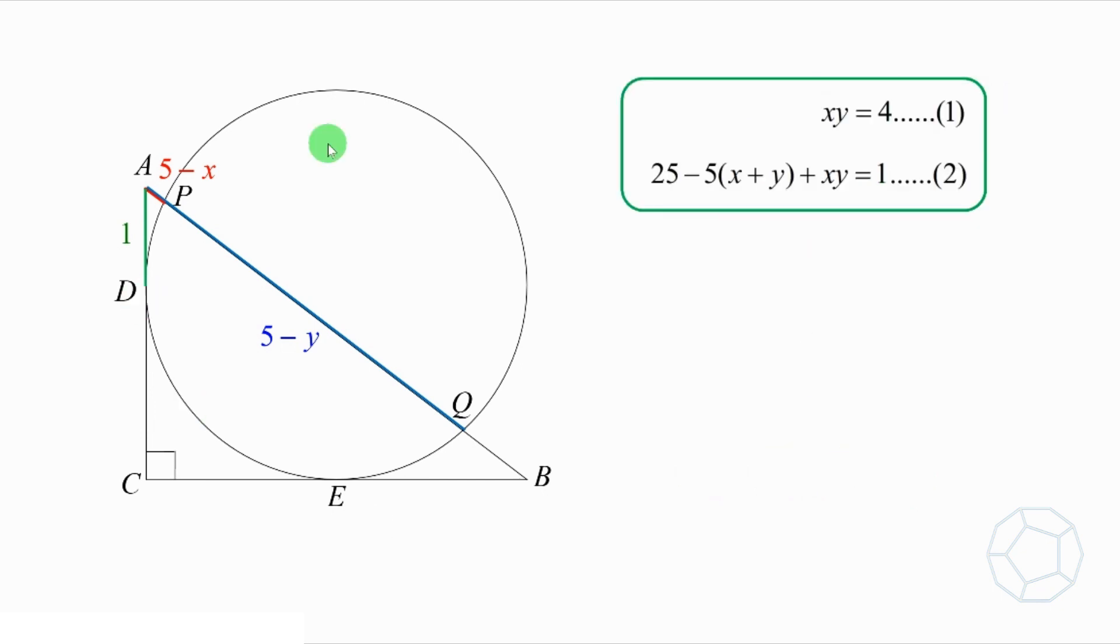We have done all the geometry. Let's move on to the algebra. Now, we can put equation 1 into equation 2. Simplify a little bit. We get X plus Y is equal to 28 over 5. Let's call this equation 3.